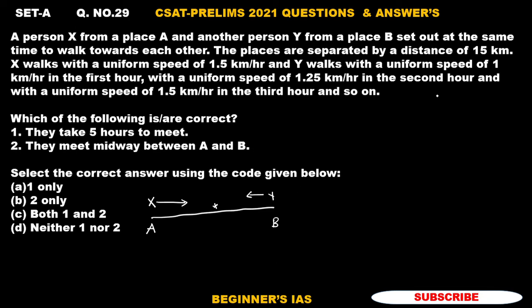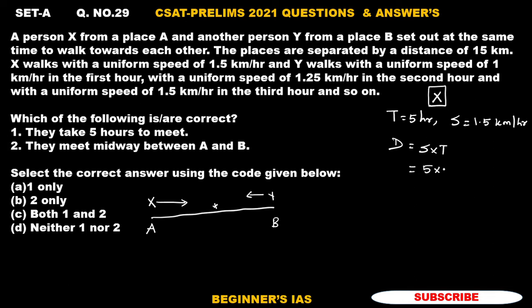For the second statement, we need to identify the distance covered by X and also the distance covered by Y. Time is given as five hours. X walks at a uniform speed throughout five hours — that is 1.5 km per hour. Using the formula, distance equals speed multiplied by time: 5 into 1.5, which gives 7.5 km. So the distance covered by X is 7.5 km.